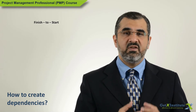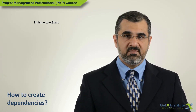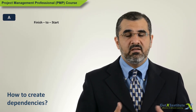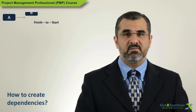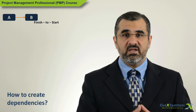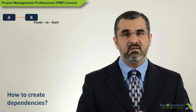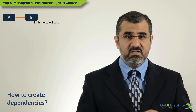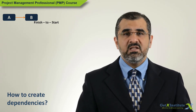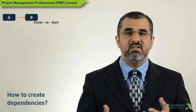When the predecessor activity finishes, then the successor activity starts. So in the example, when activity A is done, then activity B starts. If activity A is late, the start of activity B will also be late because it cannot start until A is done. This relationship is so common that it is not even identified on the schedule, and in the absence of any other relationship, it is assumed that this is the relationship.